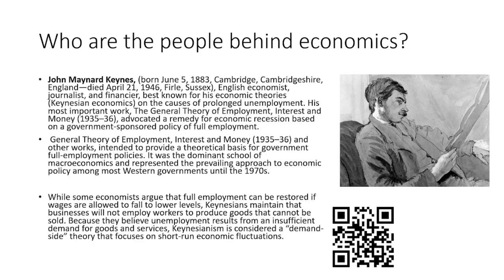Then we have John Maynard Keynes, an English economist, journalist, and financier best known for his economic theories — Keynesian economics — on the causes of prolonged unemployment. His most important work is The General Theory of Employment, Interest, and Money, which advocated a government-sponsored policy of full employment as a remedy for economic recession. Published around 1935 to 1936, it provided a theoretical basis for government full employment policies and was the dominant school of macroeconomics and prevailing approach to economic policy among Western governments until the 1970s.